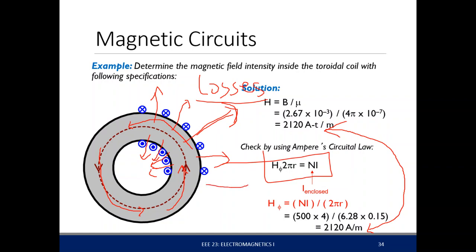We have made similar assumptions before — for example, with the capacitor. We assume that the electric field is perfectly perpendicular between the plates, but in reality there is an electric field that flows outward along curved streamlines. We call this the fringing effect, or fringes.